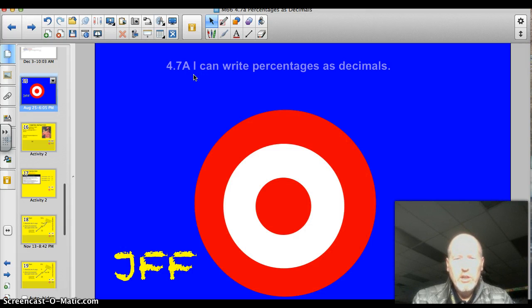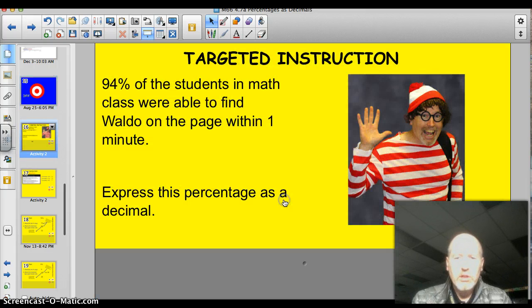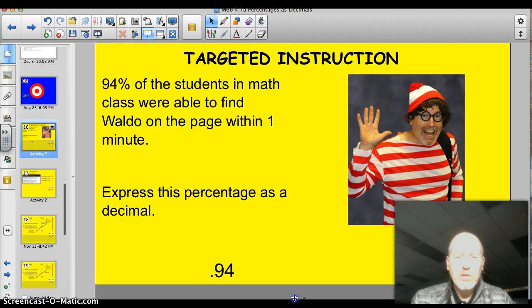Today, officially our target is 4.7a. I can write percentages as decimals. Let's do this thing. 94% of the students in math class were able to find Waldo on the page within one minute. Express this percentage as a decimal. 94%. Well, as a decimal, that's .94. How'd you do? Did you get that one right?